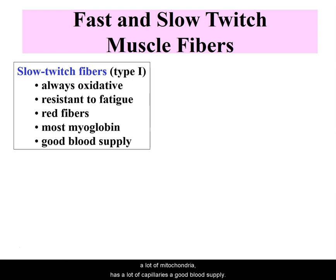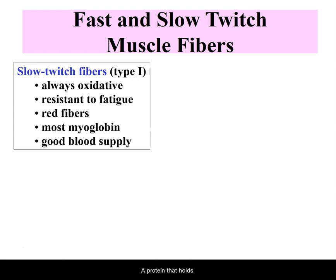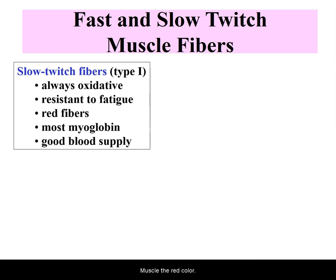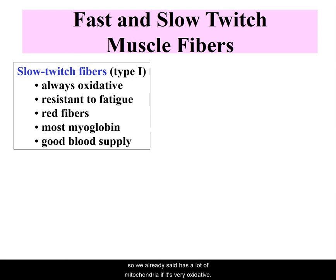Because of aerobic respiration, mitochondria make a lot of ATP, so slow twitch fibers have a lot of mitochondria, a lot of capillaries, a good blood supply, and a lot of myoglobin. Myoglobin is a protein that holds onto oxygen in the muscle. The more myoglobin, the more oxidative and the more red the muscle will be.